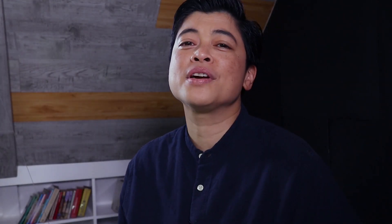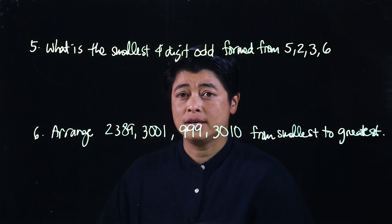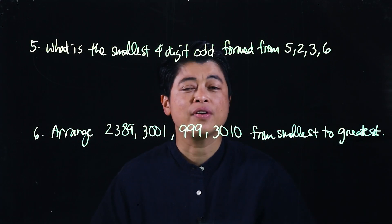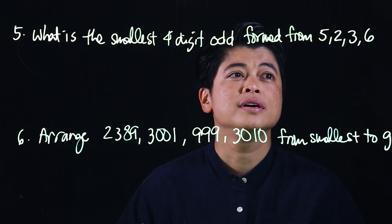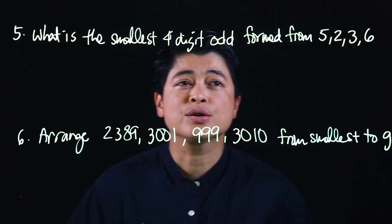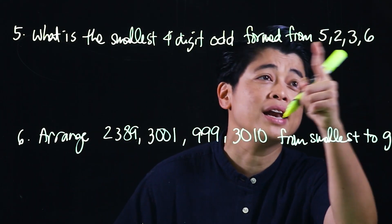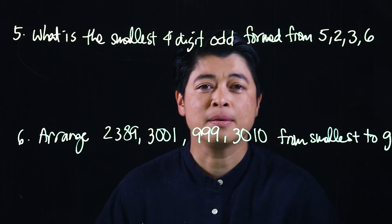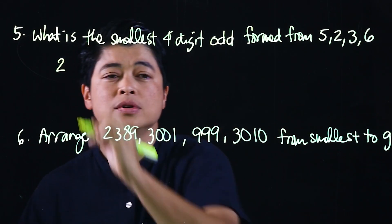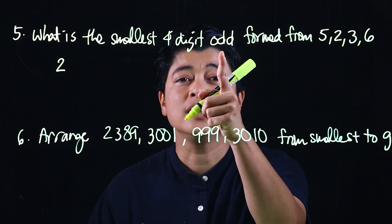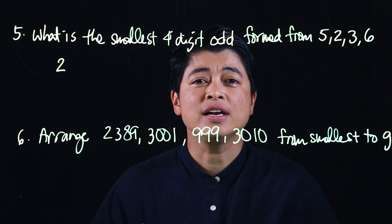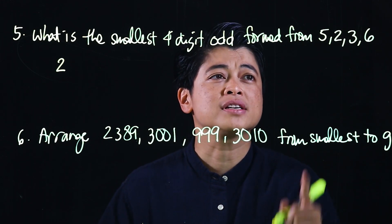The first question asks: what is the smallest four-digit odd number that can be formed from the digits five, two, three, and six? If we want the smallest, we start with the smallest among the numbers, which would be two. Then, since it says odd, we look at the other odd numbers that are left.